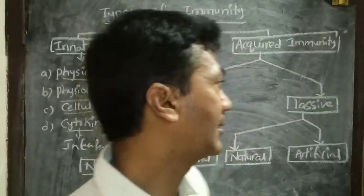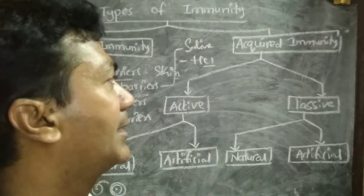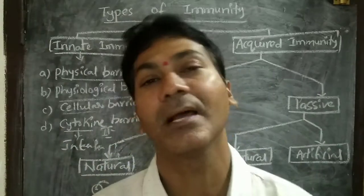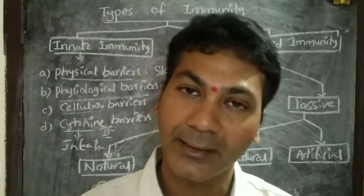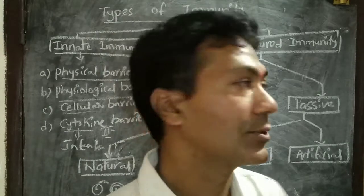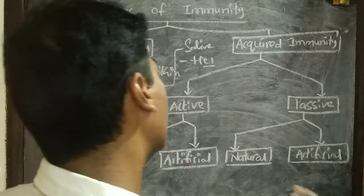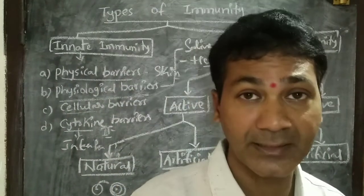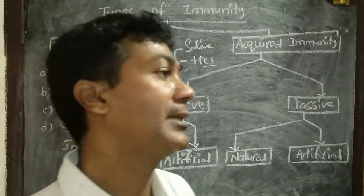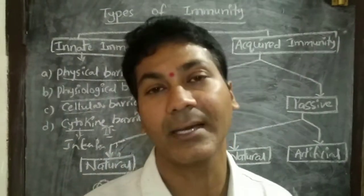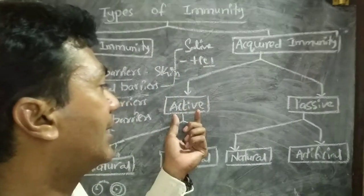An important concept is acquired immunity — the immunity developed in an organism during its lifetime. It is again of two types. If the immunity developed by an organism lasts for a longer time or even an entire lifetime, it is called active immunity.